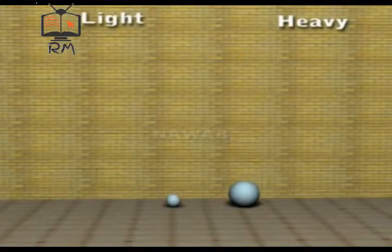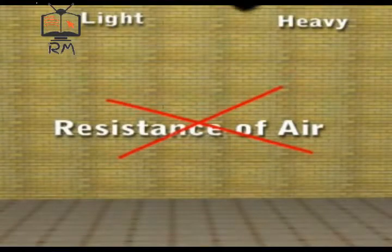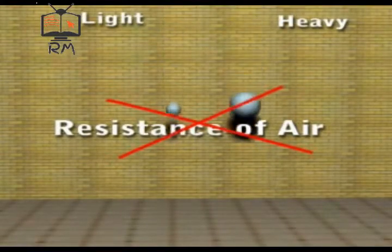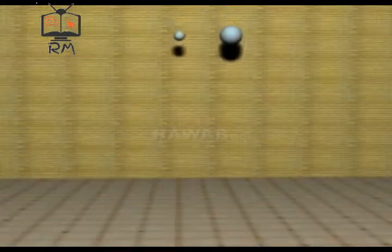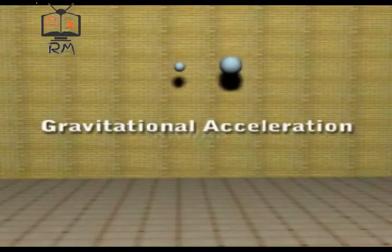From this effect, he concluded that if we neglect the air resistance, then all bodies, either lighter or heavier, will fall down with uniform acceleration. This acceleration is known as gravitational acceleration.